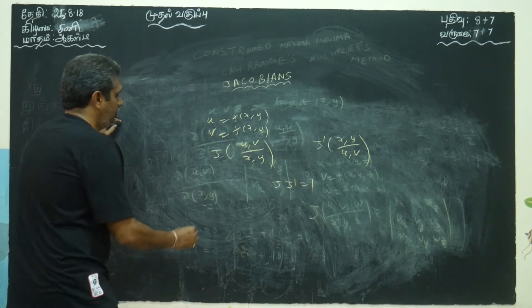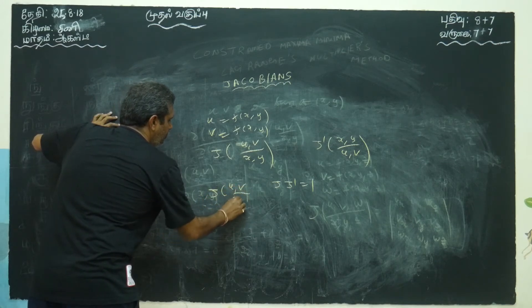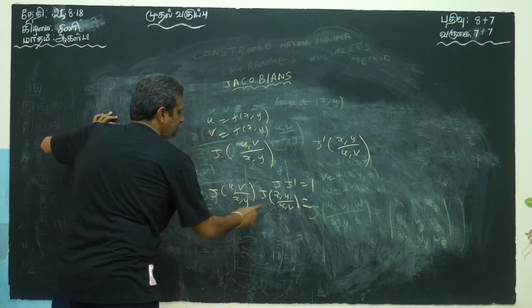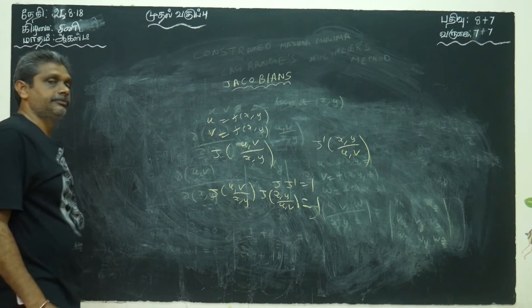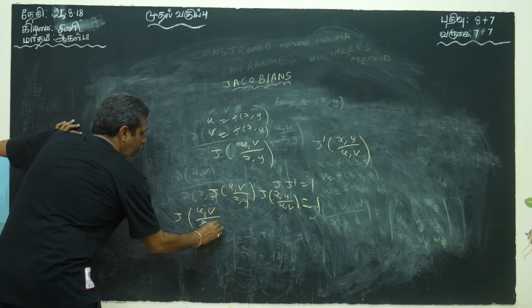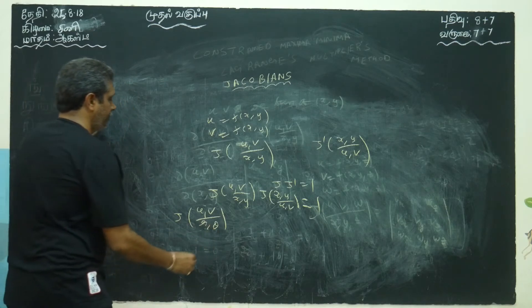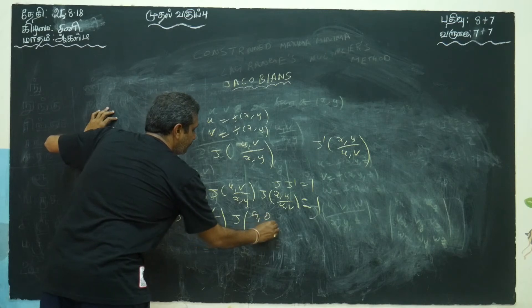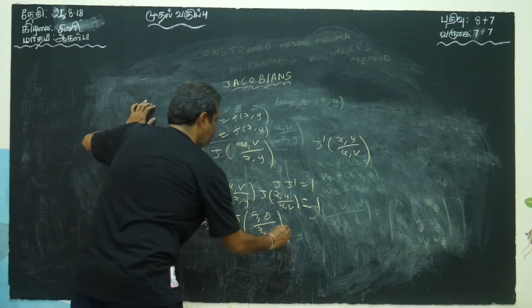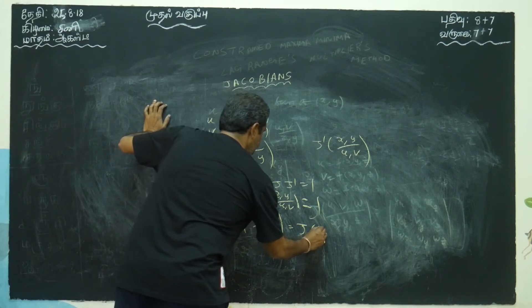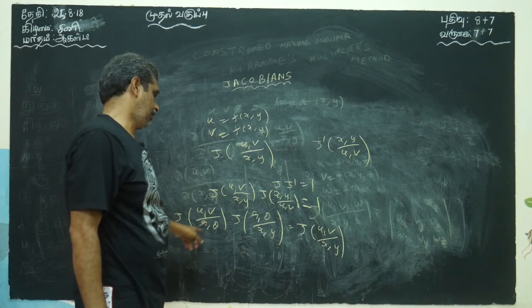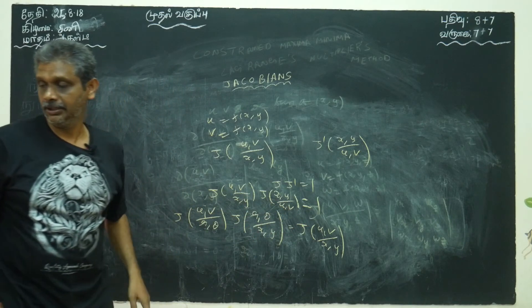This is one property: J of (u,v)/(x,y) × J of (x,y)/(u,v) = 1. Another property is the chain rule: if u and v are functions of r and θ, and r and θ are functions of x and y, then J of (u,v)/(x,y) = J of (u,v)/(r,θ) × J of (r,θ)/(x,y). You can think of the intermediate variables cancelling. This is the chain rule property for Jacobians.